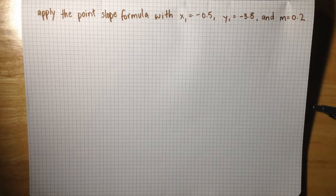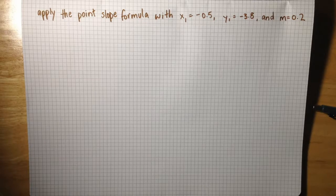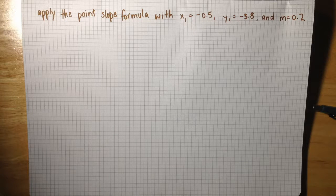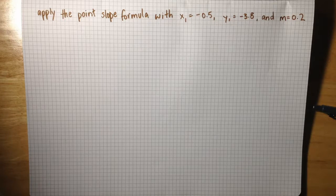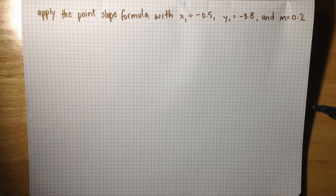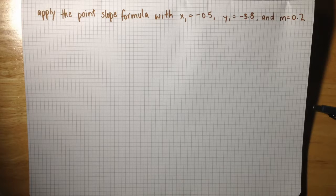Apply the point-slope formula with x1 equaling negative 0.5, y1 equaling negative 3.8, and m equaling 0.2.